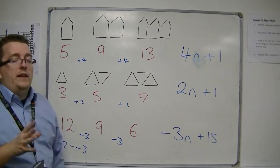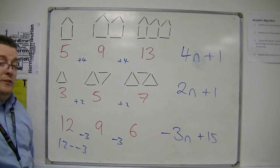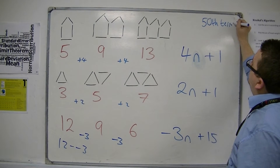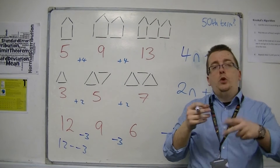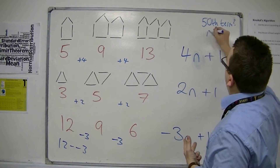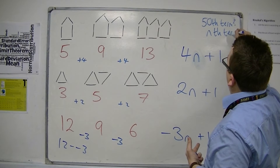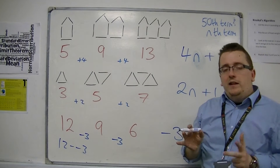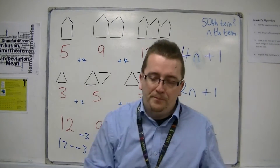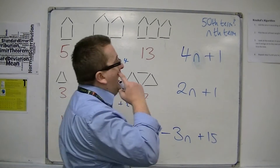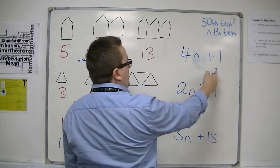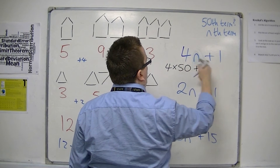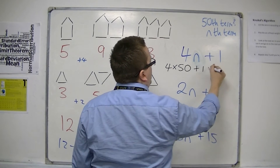So let's say I want to know what the 50th term is in each sequence. Remember that we're calling this the nth term, so all I've done is replace the n with 50, and that's exactly what we do for each of these problems. If n is 50, then for the first sequence I would have 4 lots of n, so 4 lots of 50, plus 1 — that's 4 times 50 plus 1, which equals 201.